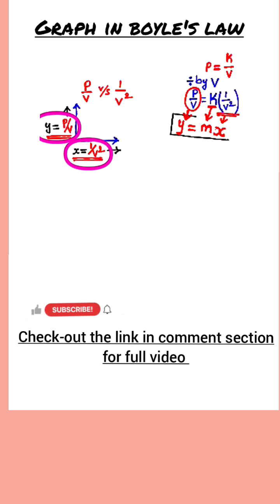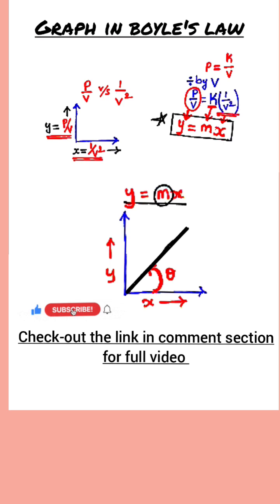So what will be the nature of the curve for this equation y equals mx? The nature of the curve is going to be a straight line, a straight line which is passing through the origin. So this will be your curve. This is the curve for P by V versus 1 by V square.